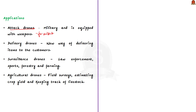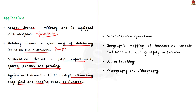Delivery drones are being employed as a new way of delivering items to customers by big shipping companies such as Amazon, and are also used to deliver medicines in epidemic areas. Surveillance drones are equipped with cameras and used across industries such as law enforcement, sports, forestry, and farming — agricultural drones carry out field surveys, estimate crop yields, and track livestock. Apart from these, drones are used for search and rescue operations, geographical mapping of inaccessible terrains, building safety inspections, storm tracking, and photography and videography. In this topic, we saw about UAVs in brief and their applications.